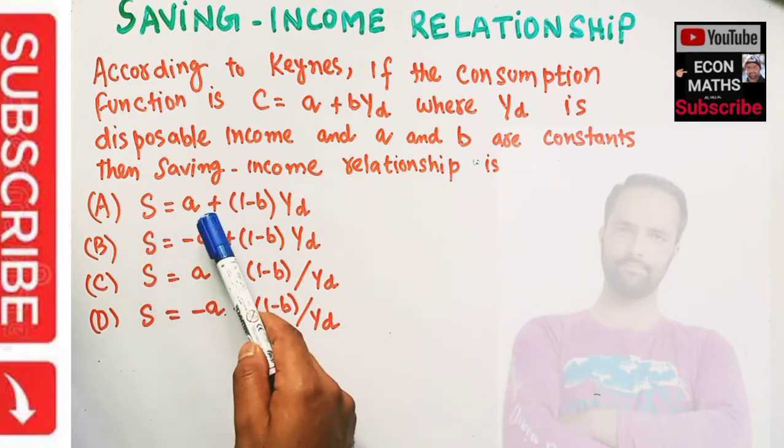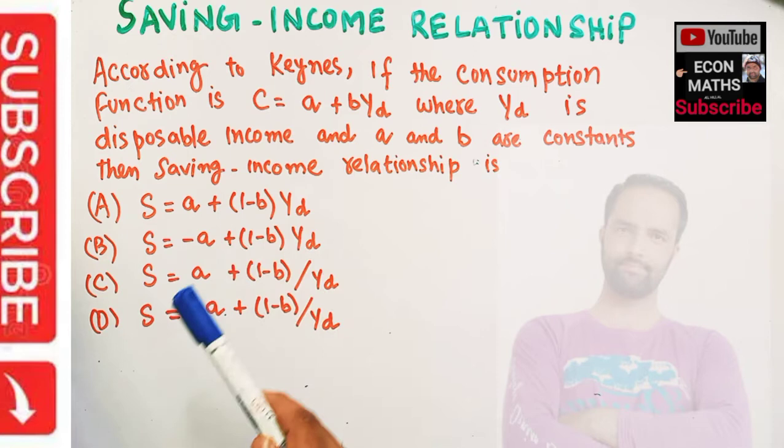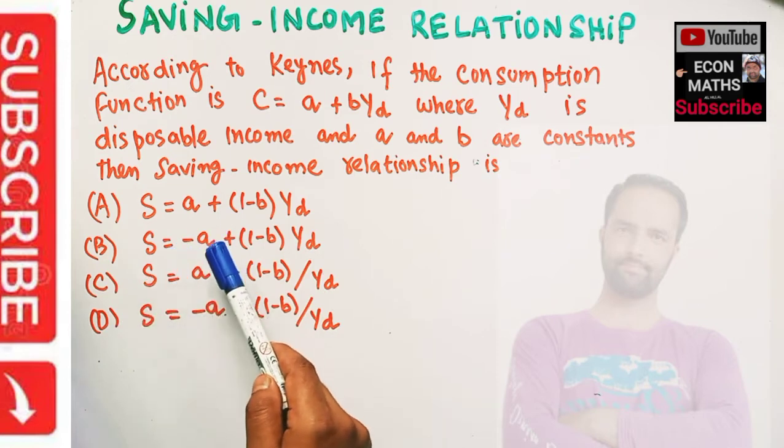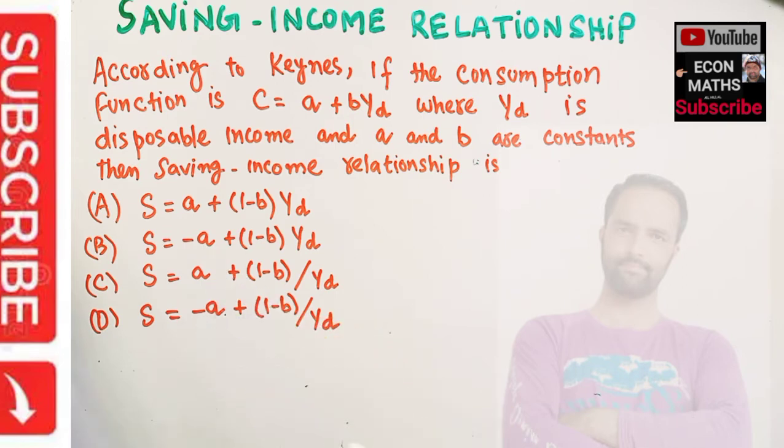We are being given the options: (A) S = A + (1-B)Y_D, (B) S = -A + (1-B)Y_D, (C) S = A + (1-B)/Y_D, (D) S = -A + (1-B)/Y_D. So how do we find it?